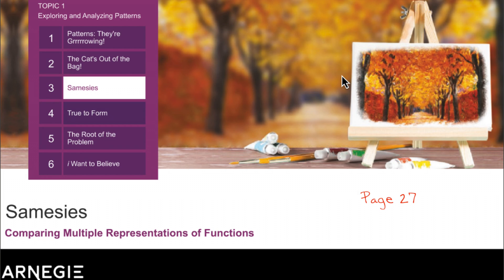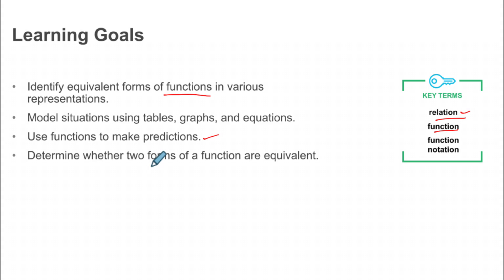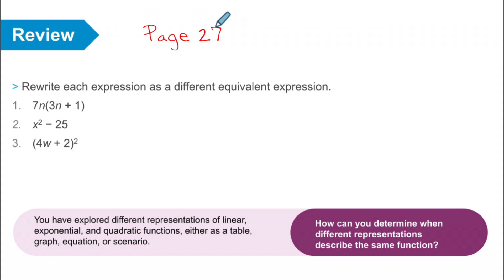Hey, welcome Algebra 2 students! Today we are starting on page 27. We're going to learn about equivalent forms of functions — hopefully you remember what a function is and what a relation is. We're going to use tables, graphs, and equations to analyze these functions and make predictions. In the next video we'll figure out if they are equivalent by doing some algebra.